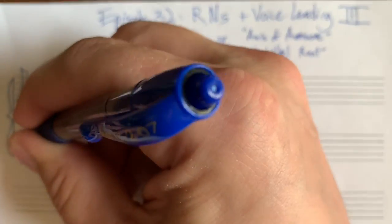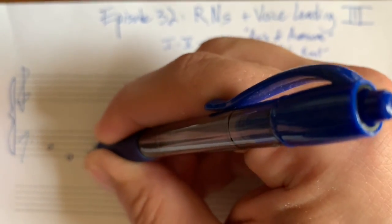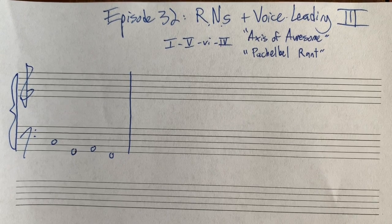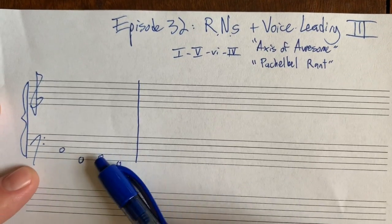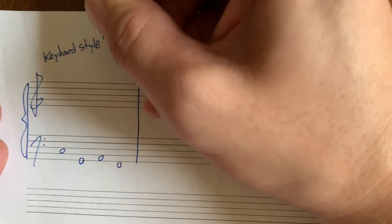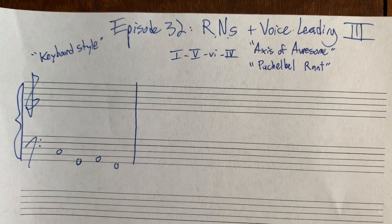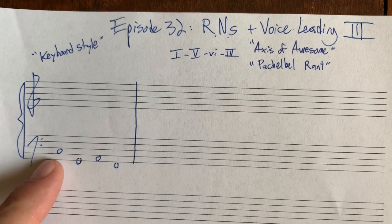This chord progression — let's work with it in the key of C major, and we're going to write in what we call keyboard style. In keyboard style, we usually write just the bass in the left hand, generally in bass clef. The word 'bass' in music theory just means the lowest note. In keyboard style, we usually put three notes in the right hand. Keyboard style is a teaching term — it doesn't mean that's the only way to write for keyboard. There are any number of ways to play a keyboard, but in this common style the left hand plays one note and the right hand plays three.